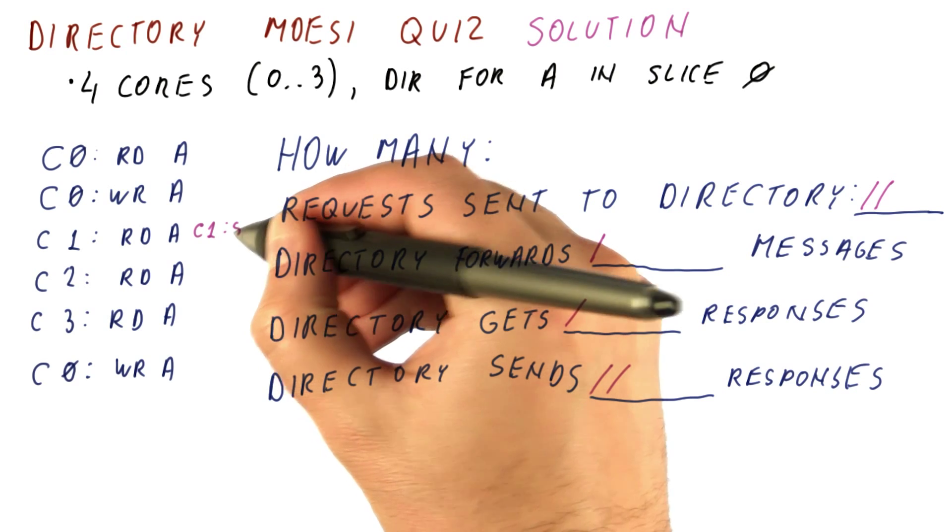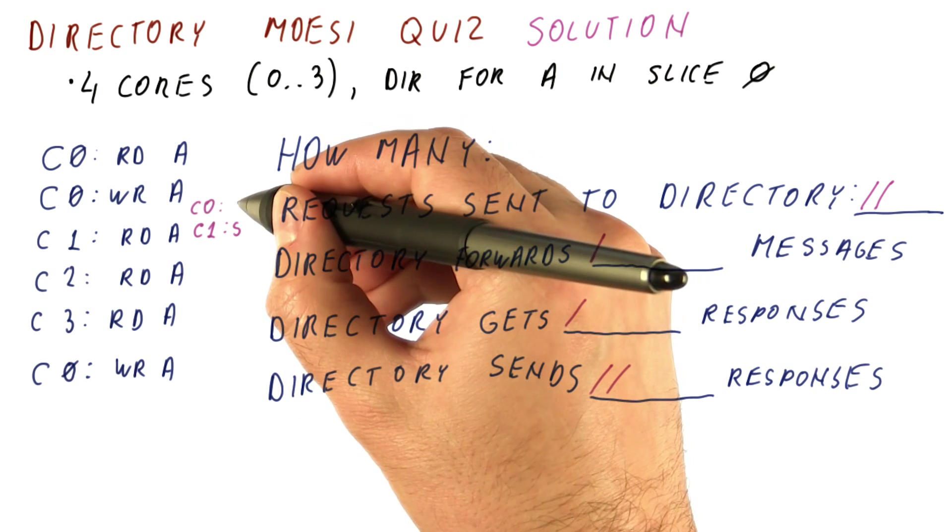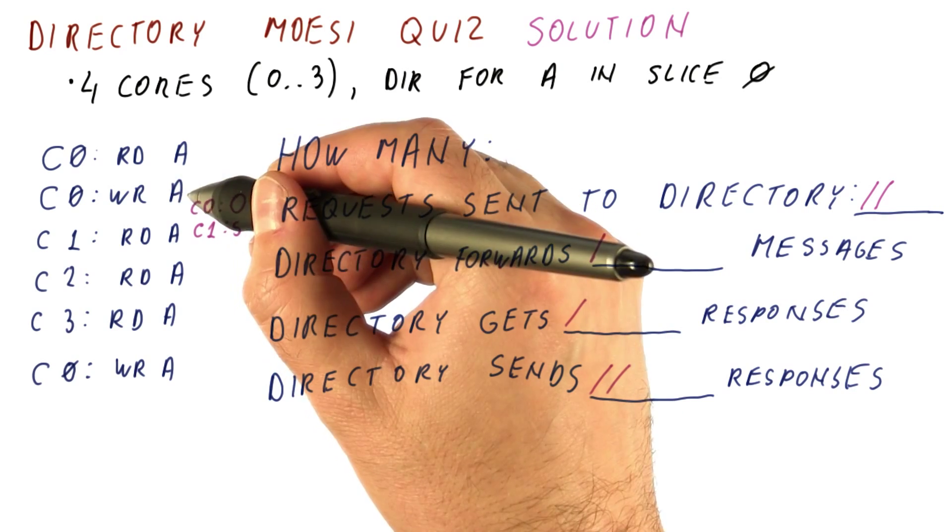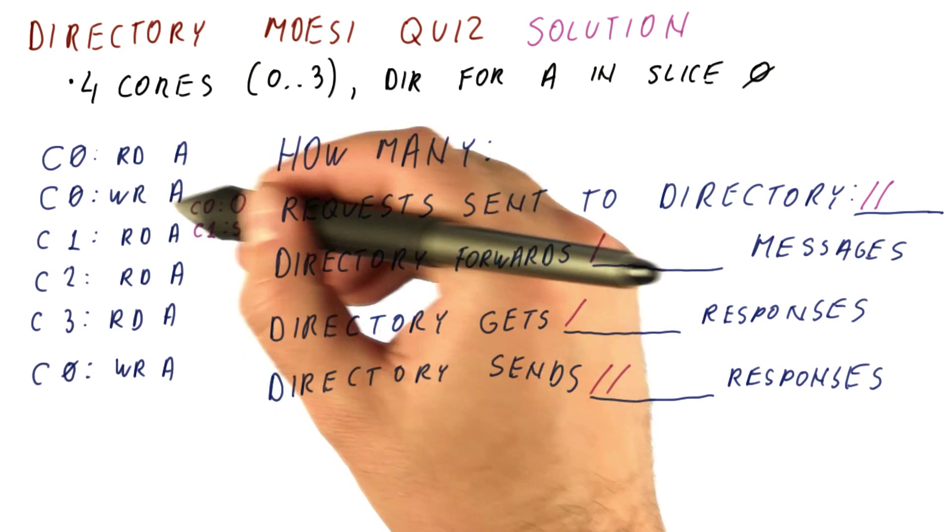So now core 1 has the block in the shared state. Core 0 is now in the owned state because it downgraded itself from modified to owned.